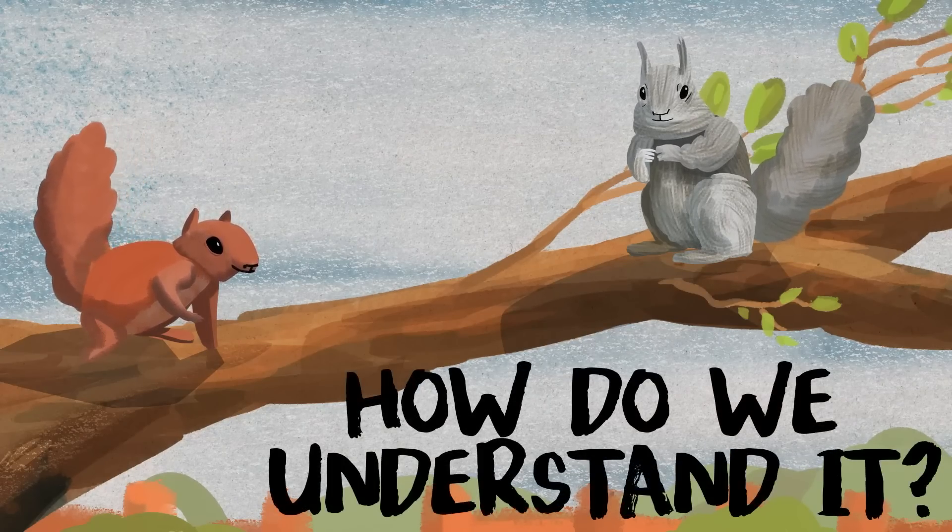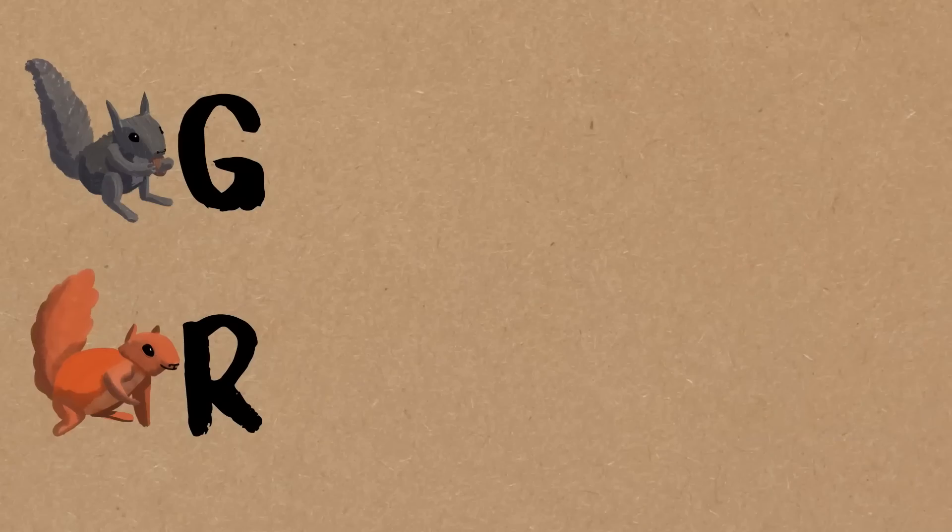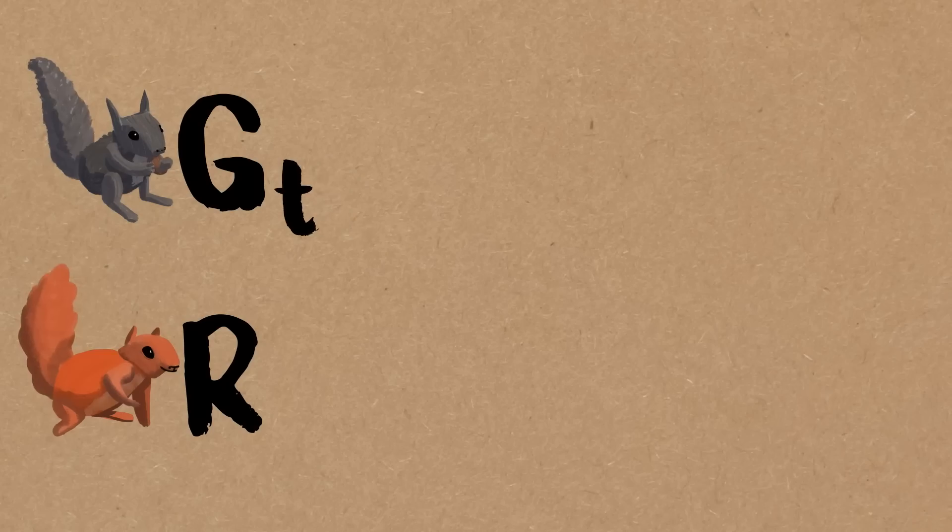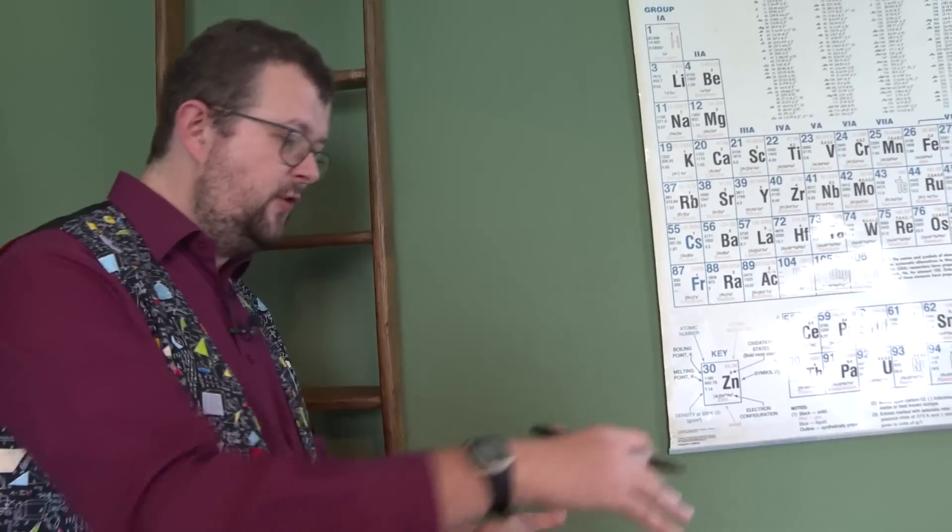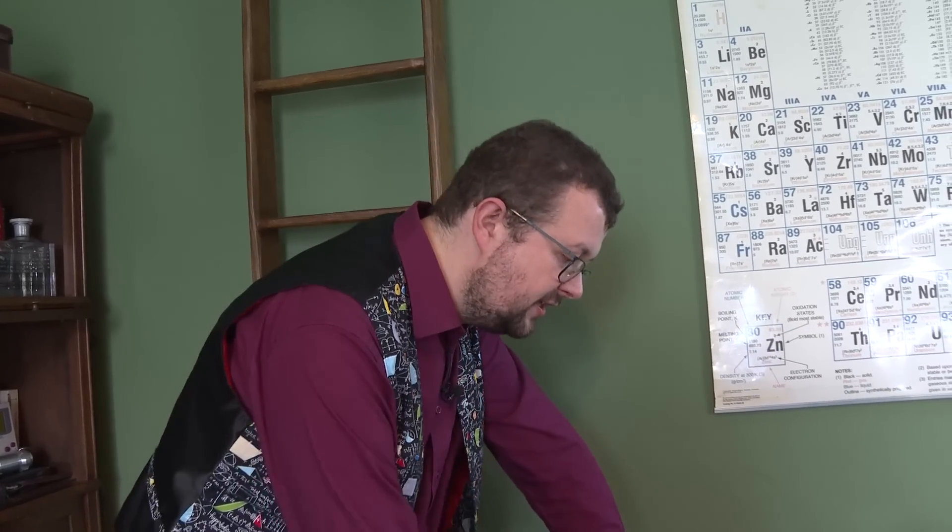So how do we understand that? Well, we try and write down interaction equations between the two squirrel populations. We're going to be looking at the grey squirrel and the red squirrel population, and we're going to write down some equations that tell us how they interact. The grey squirrel population changes with time, so t is going to be time, the red population is going to be changing over time.